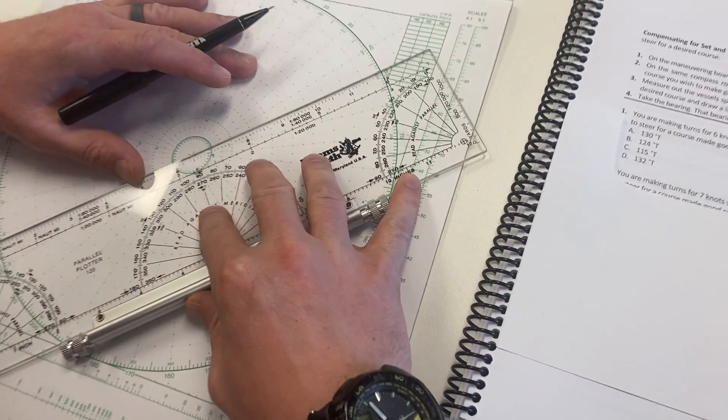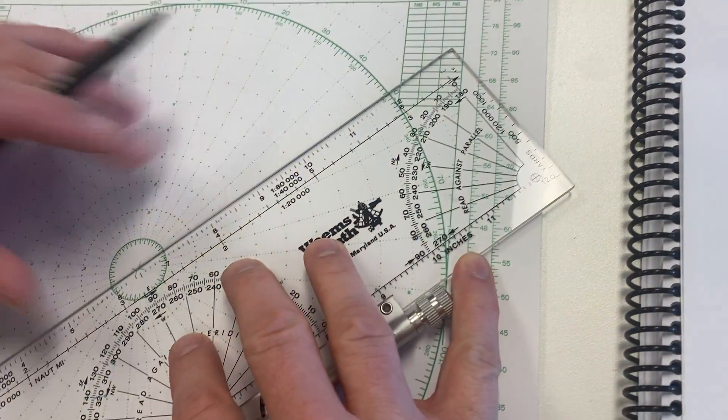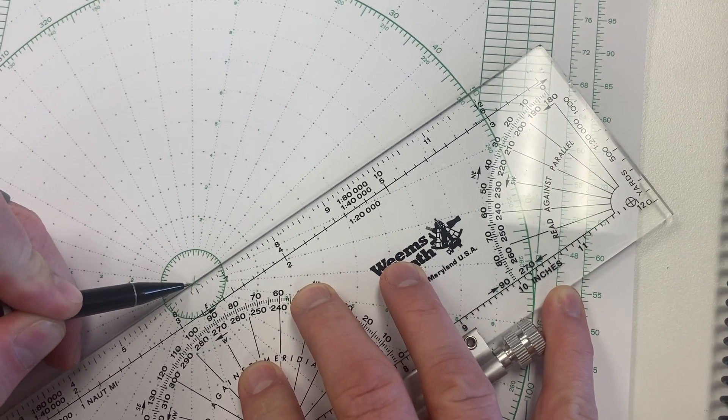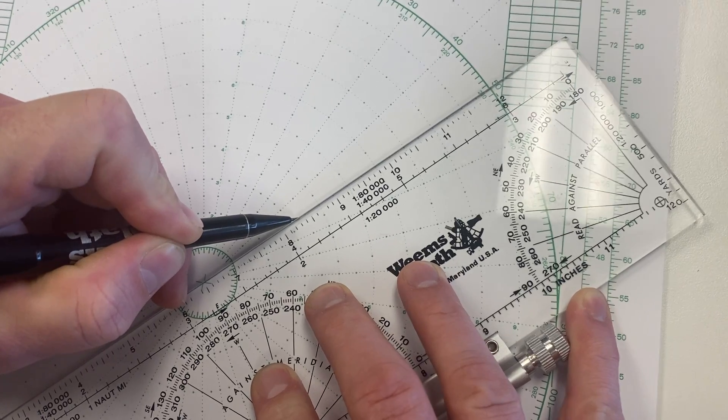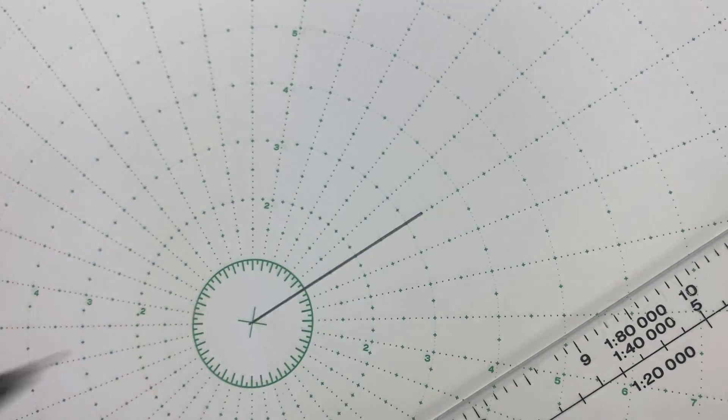We're going to line up with 050 right from the center here, and we're going to go out to 1, 2, 3.3. There it is, 3.3.